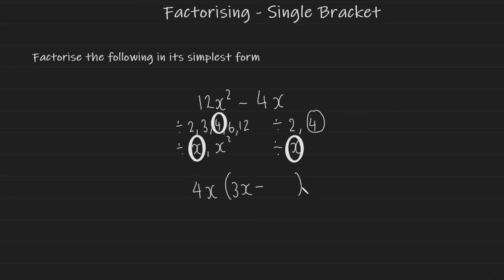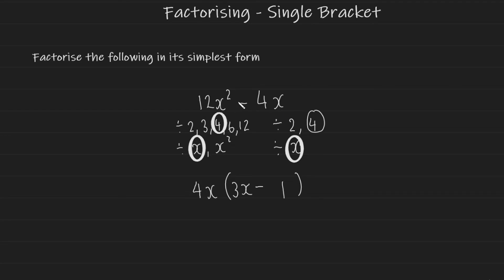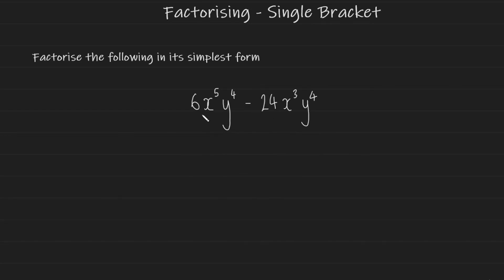4x divided by 4x is 1, so the result is 4x(3x − 1). Over time, if you're proficient with factors and times tables, you can see straight away that the highest common factor of 12 and 4 is 4. For algebra, if a variable is present in both terms, take out the variable with the lowest power — that's your highest common factor. Here x² and x¹ share x¹ as the highest common factor.